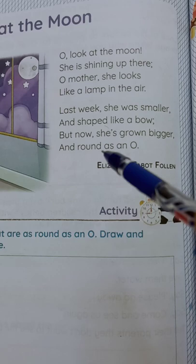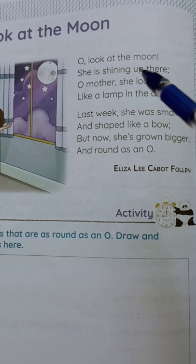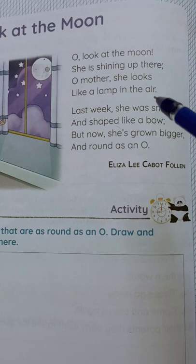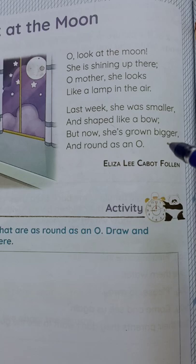So once again let's read this poem. Oh, look at the moon. Oh, look at the moon. She is shining up there. Oh, mother, she looks like a lamp in the air. Last week she was smaller and shaped like a bow, but now she has grown bigger and round as an O.